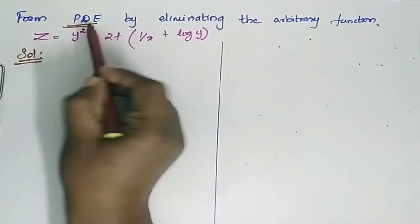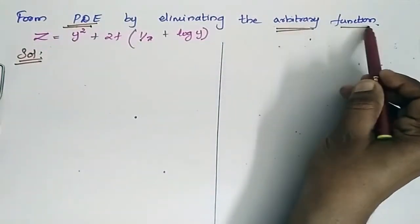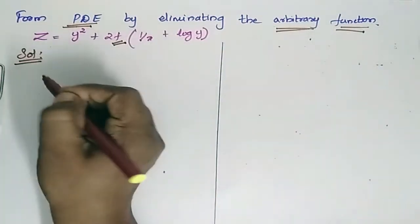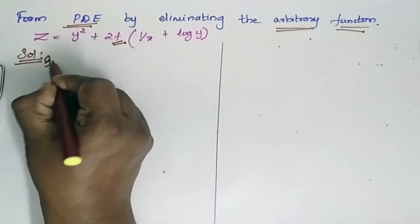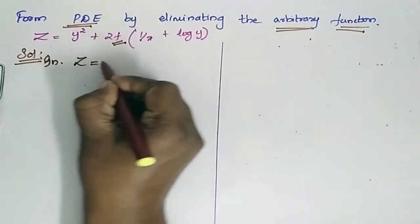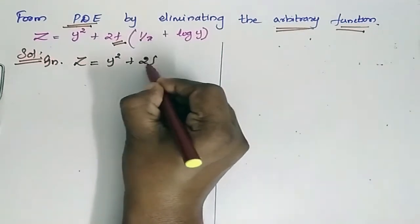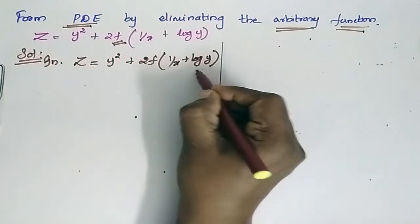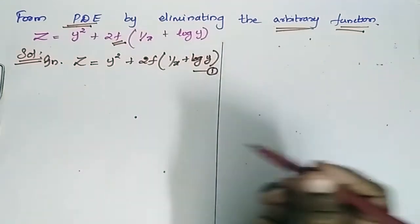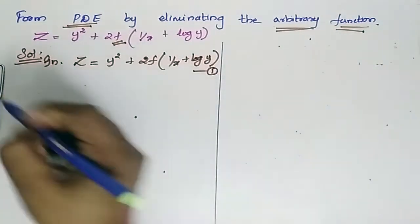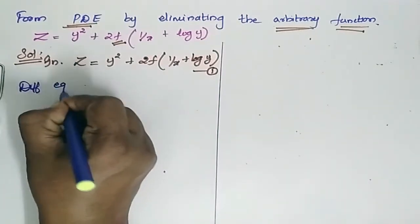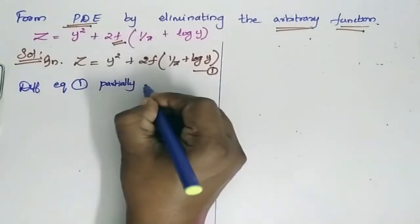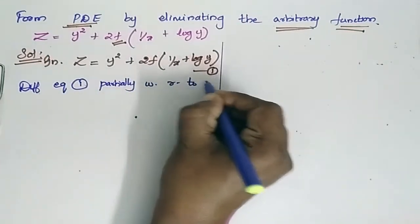Form a partial differential equation by eliminating the arbitrary function. Here we have the function f, and we have to eliminate it. Let us go for the solution. What is given is z equals y squared plus 2f of (1/x + log y). Let this be equation 1. Now differentiate equation 1 partially with respect to x.